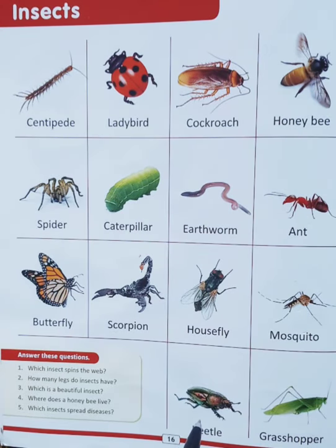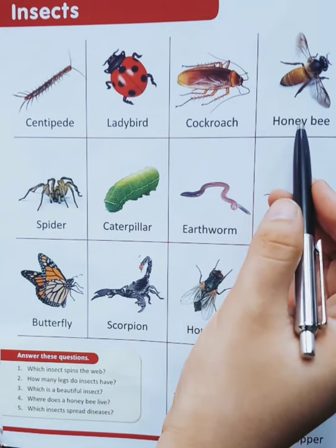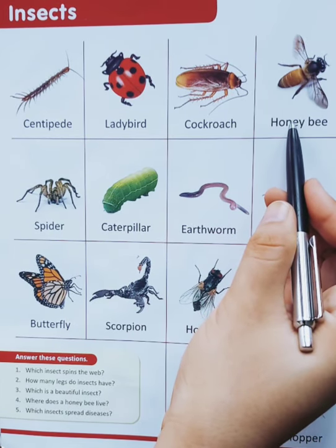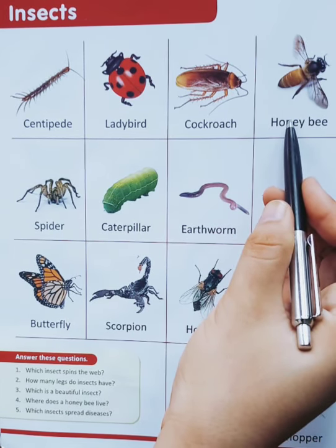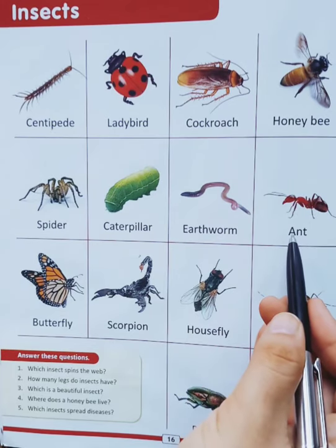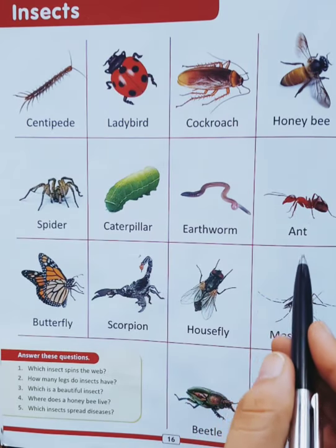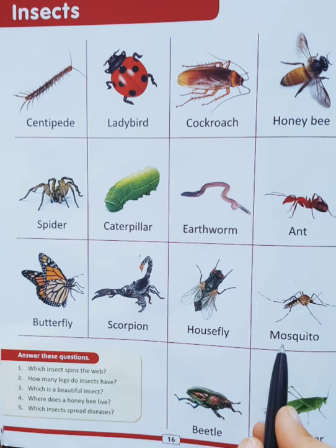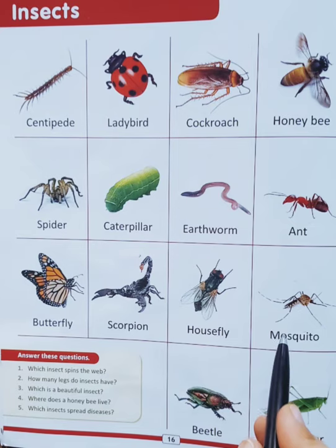Now this is beetle. This is beetle. Very good. Now next is honeybee. Honeybee. And this is ant. This is ant. Now this is mosquito. This is mosquito.